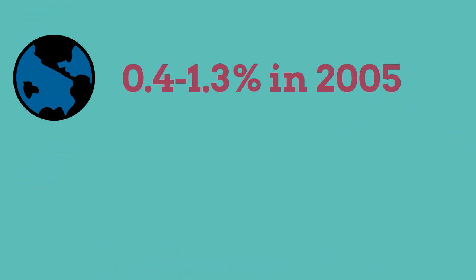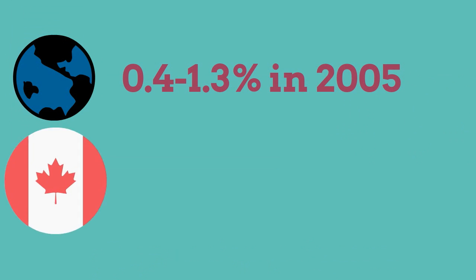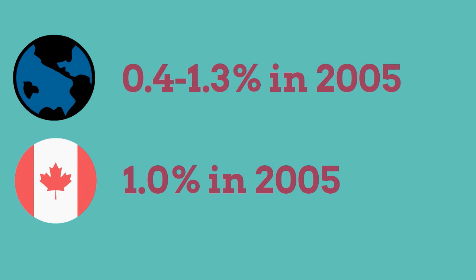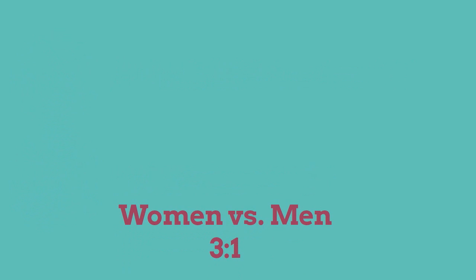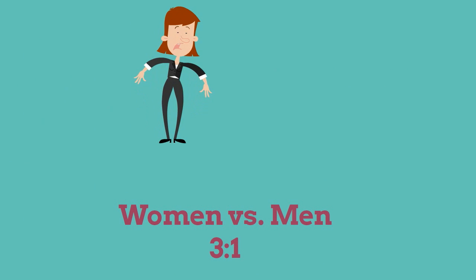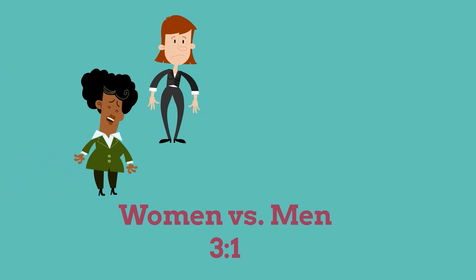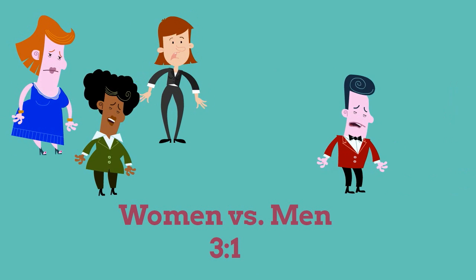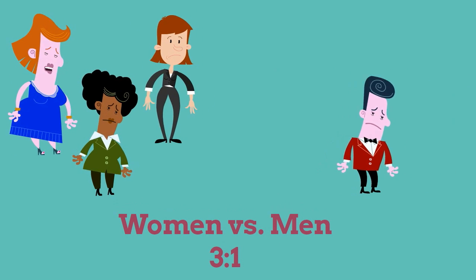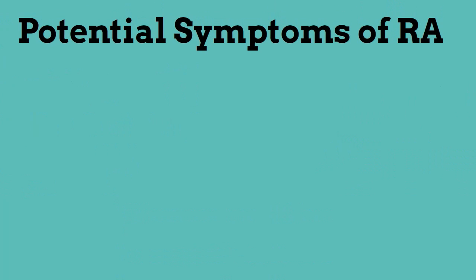Internationally, RA affects 0.4 to 1.3 percent of the population, with an estimated prevalence in Canada of one percent. Of this statistic, women are observed to be approximately three times as likely as men to develop the disease.